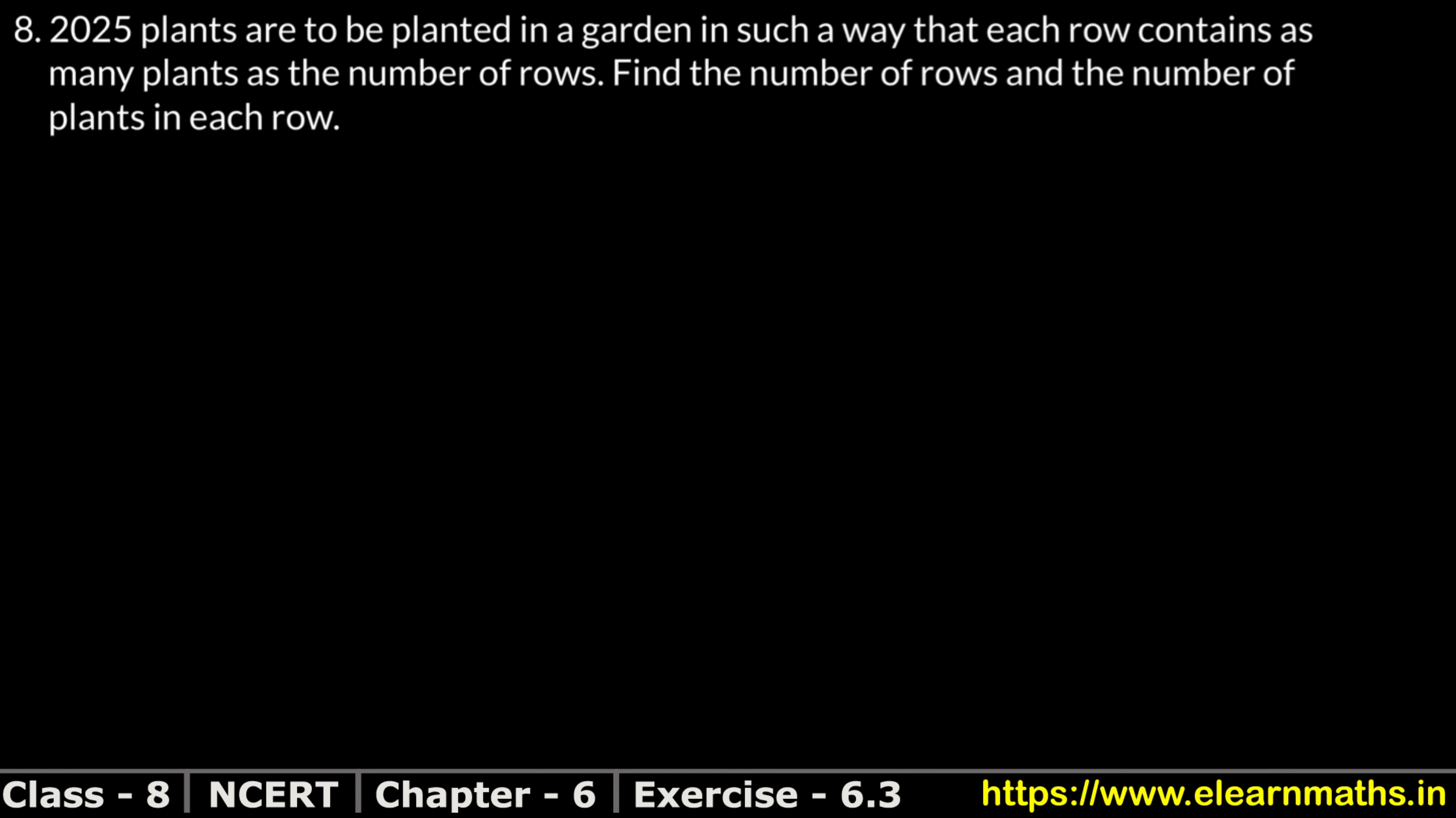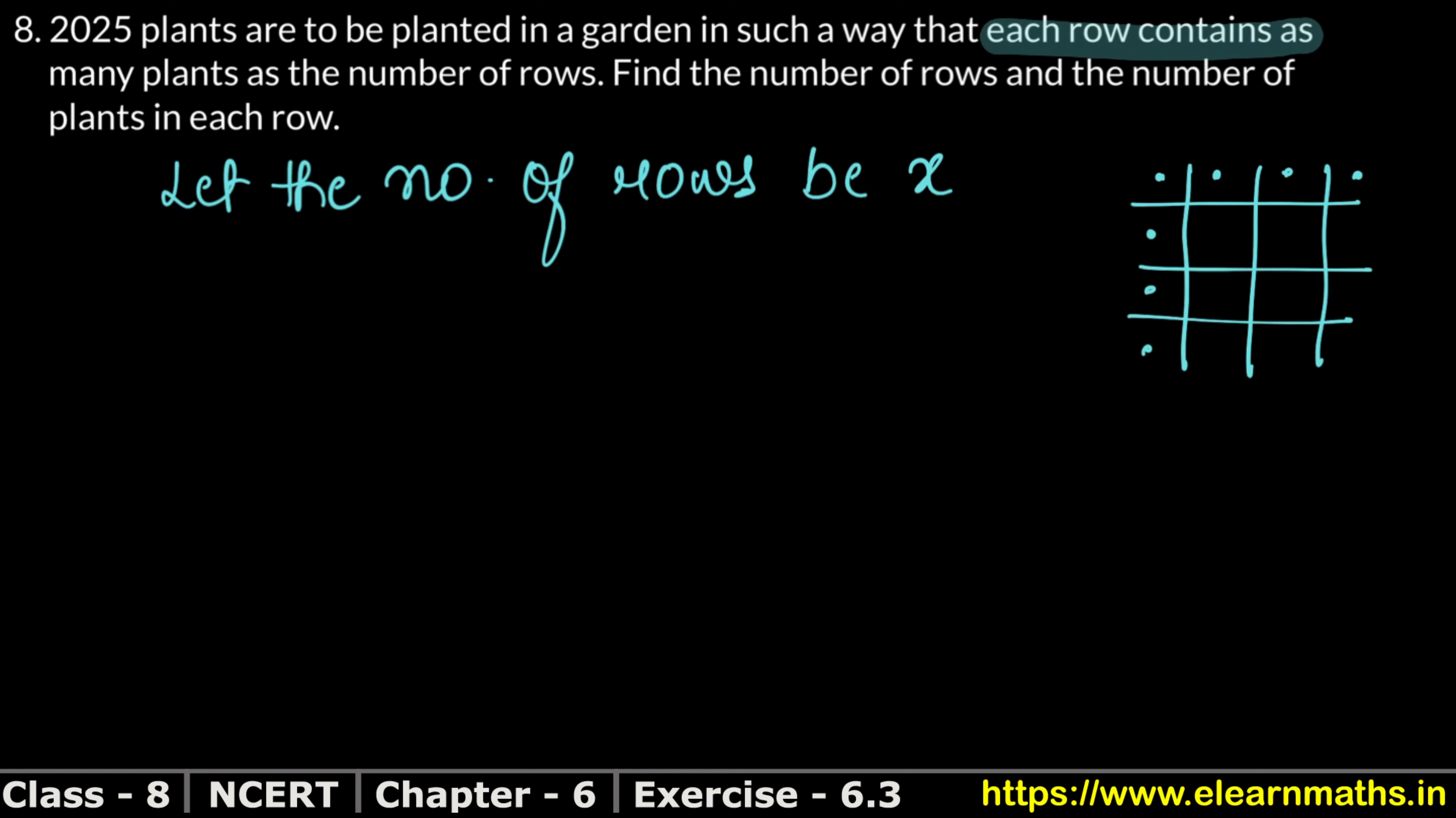Let's do question number 8. 2025 plants are to be planted in a garden in such a way that each row contains as many plants as the number of rows. He says we have to plant 2025 plants in a garden and the number of plants in a row will become the number of rows. There are 4 rows and 4 plants in each row, so the number of rows times the number of plants.